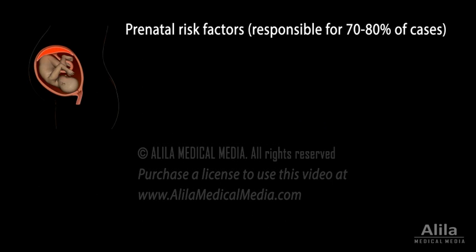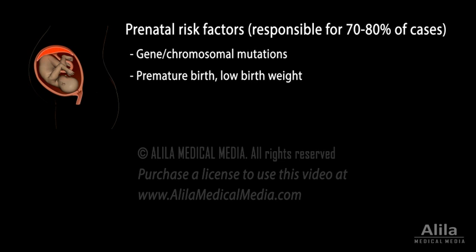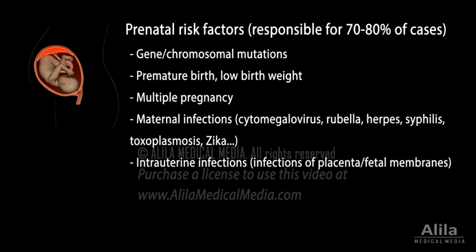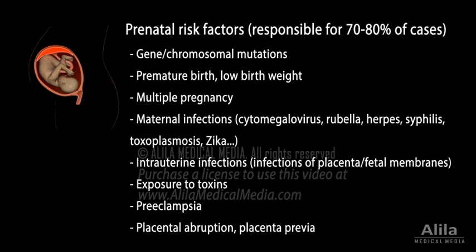There are many possible causes, and in each case the cause is often multifactorial. The risk is highest during pregnancy. Prenatal risk factors include gene or chromosomal mutations, premature birth or low birth weight, multiple pregnancy, maternal infections, intrauterine infections, exposure to toxins, and conditions that may cause bleeding in the third trimester, such as preeclampsia and placental abnormalities.